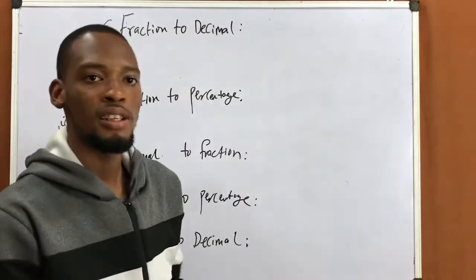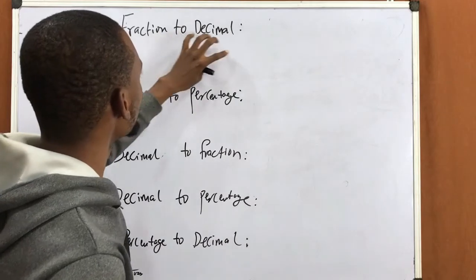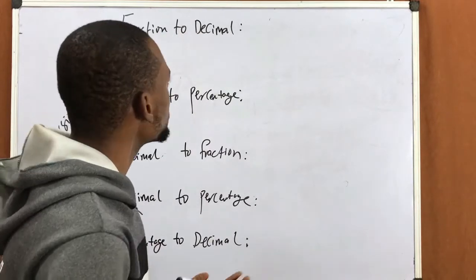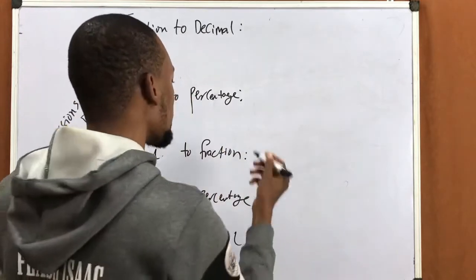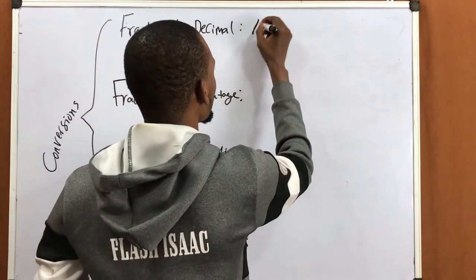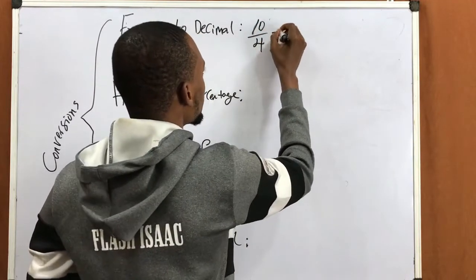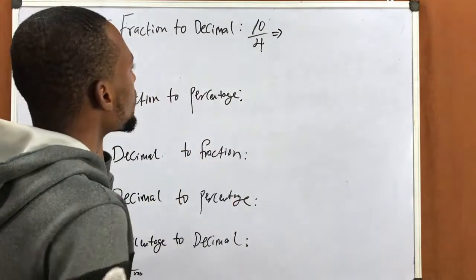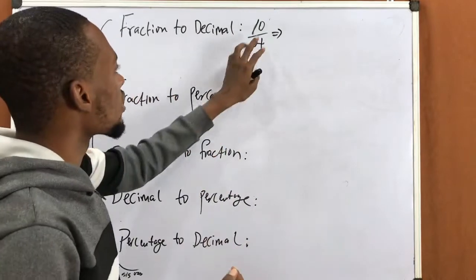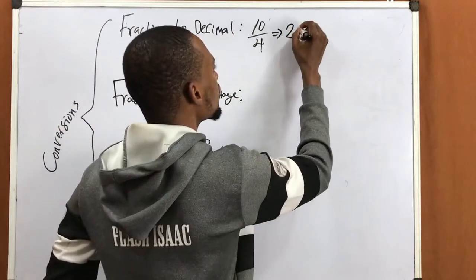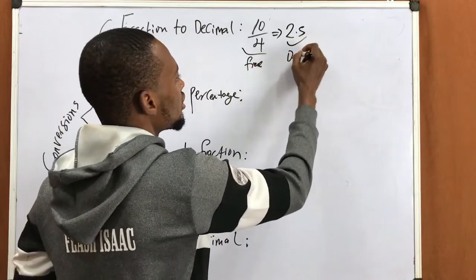They are very easy. To convert from fraction to decimal, simply divide the numerator by the denominator. So if you are given 10 divided by 4, to convert this to a decimal number, simply divide. You can use a calculator. So 10 divided by 4 gives you 2.5. This is the fraction, and this is the decimal.